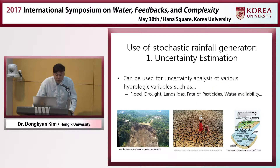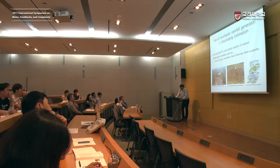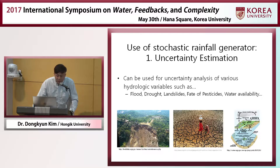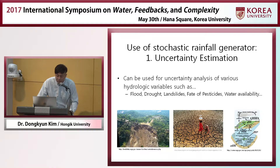So where is this stochastic rainfall generator used? First, it is widely used for uncertainty estimation. It can be used for the uncertainty analysis of various hydrologic variables such as rainfall-related variables — for example, flood, drought, landslides, or water availability.